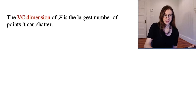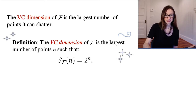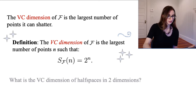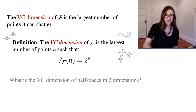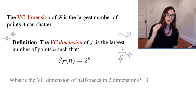This is because of the problem with the diagonals I showed you earlier. So the VC dimension of the set of functions f is the largest number of points that it can shatter. Officially, the VC dimension of f is the largest number of points n such that the growth function equals 2^n. So the VC dimension of half spaces in two dimensions is three — we can shatter three points but we cannot shatter four.